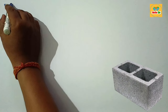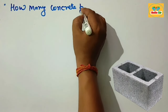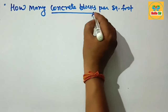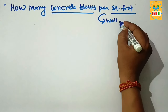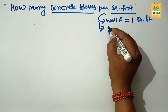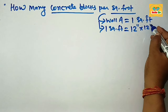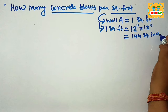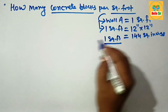Hi guys, today in this video you'll learn how many concrete blocks per square foot you need. To figure out the number of concrete blocks per square footage, start with a wall area of one square foot. If you convert one square foot into inches, that equals 12 inches multiplied by 12 inches, which is 144 square inches. This is the area of the wall in one square foot.